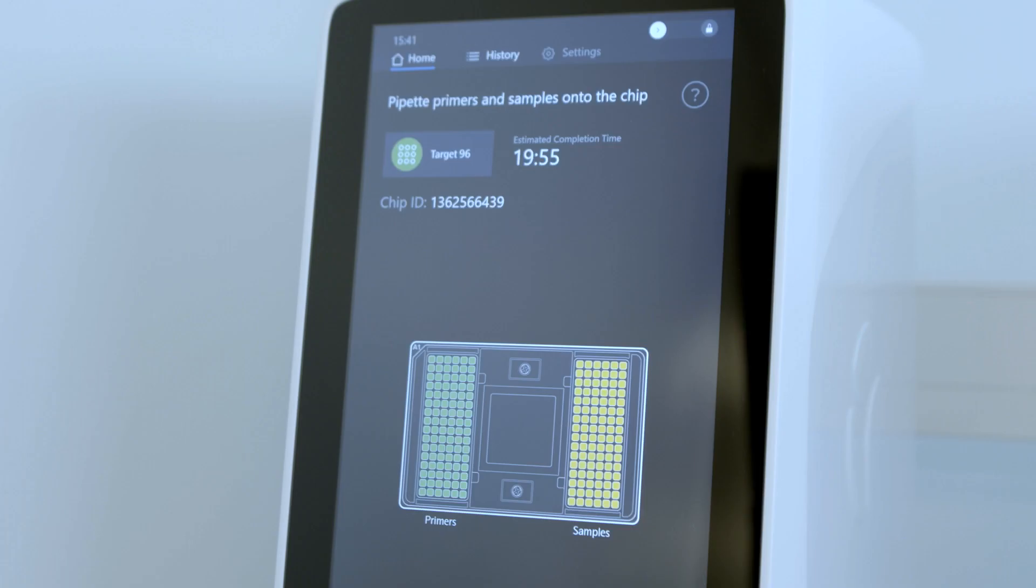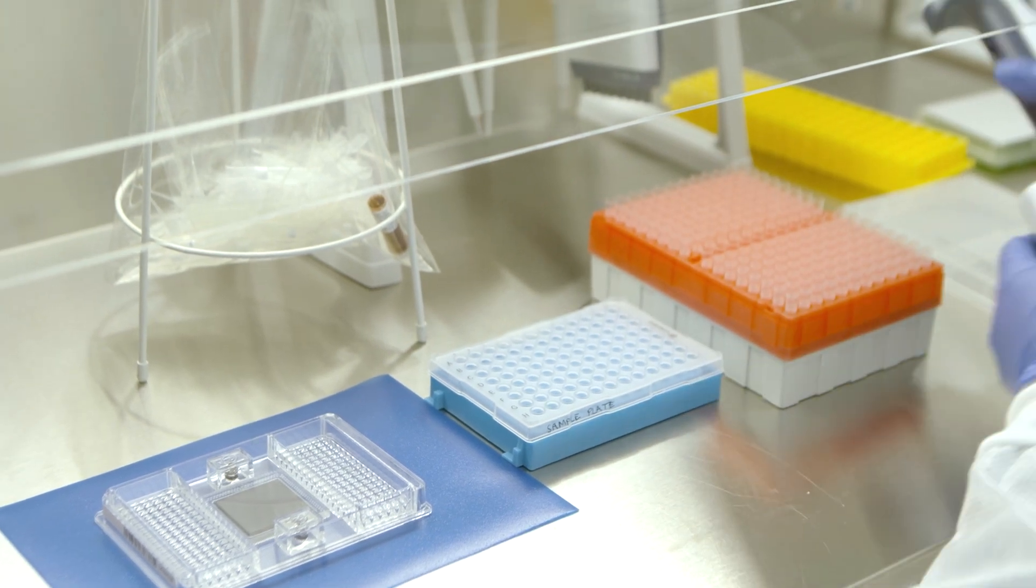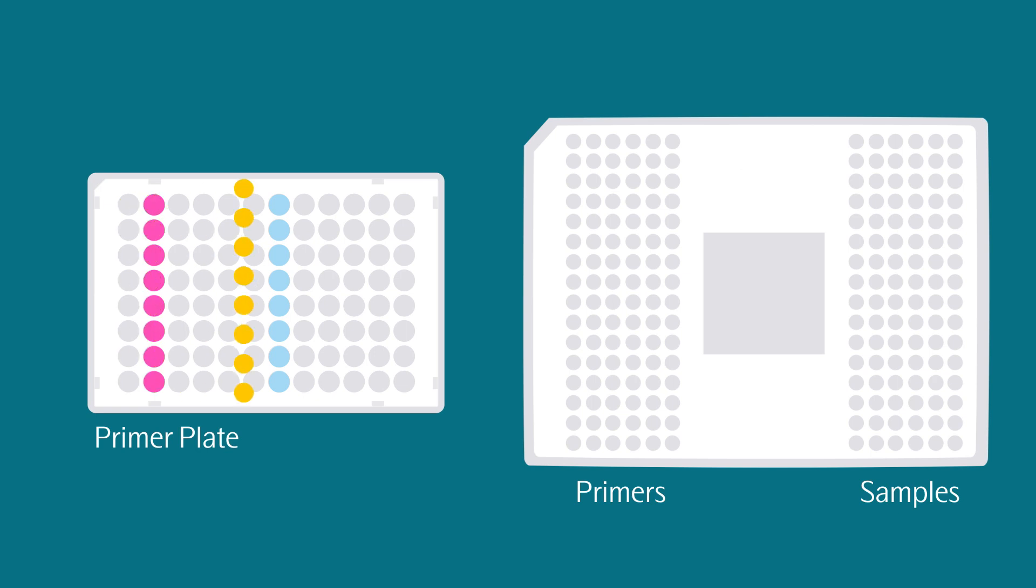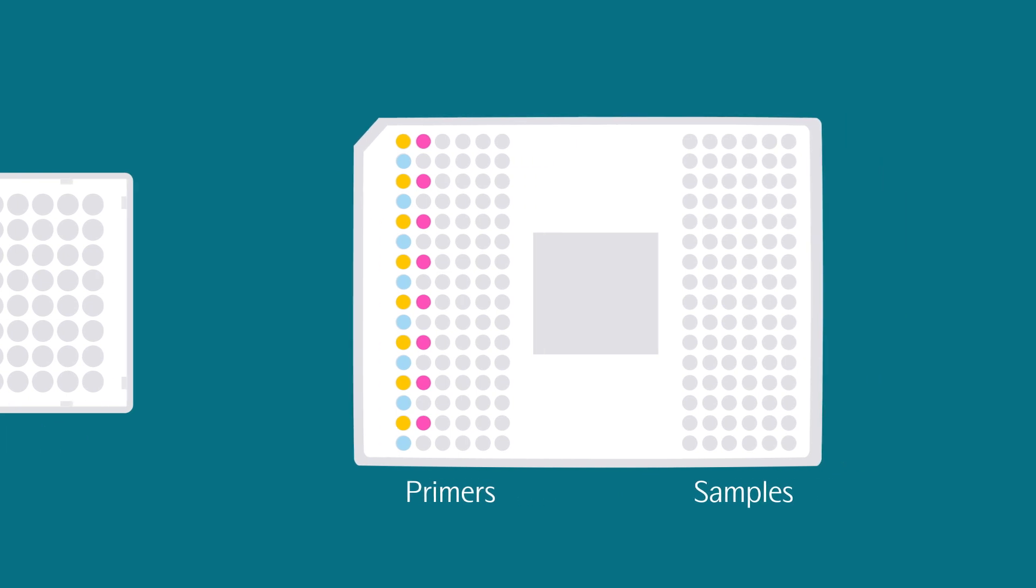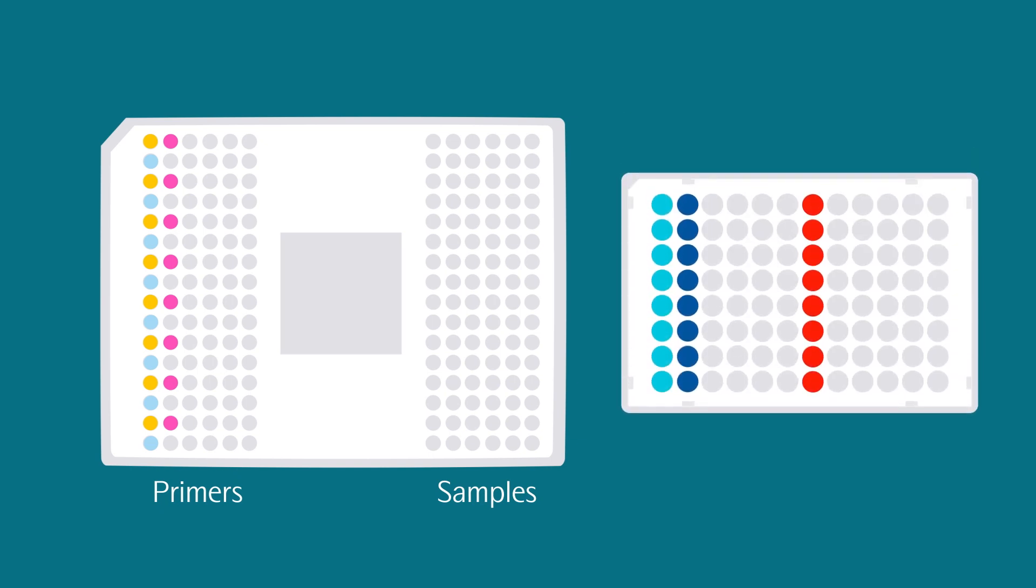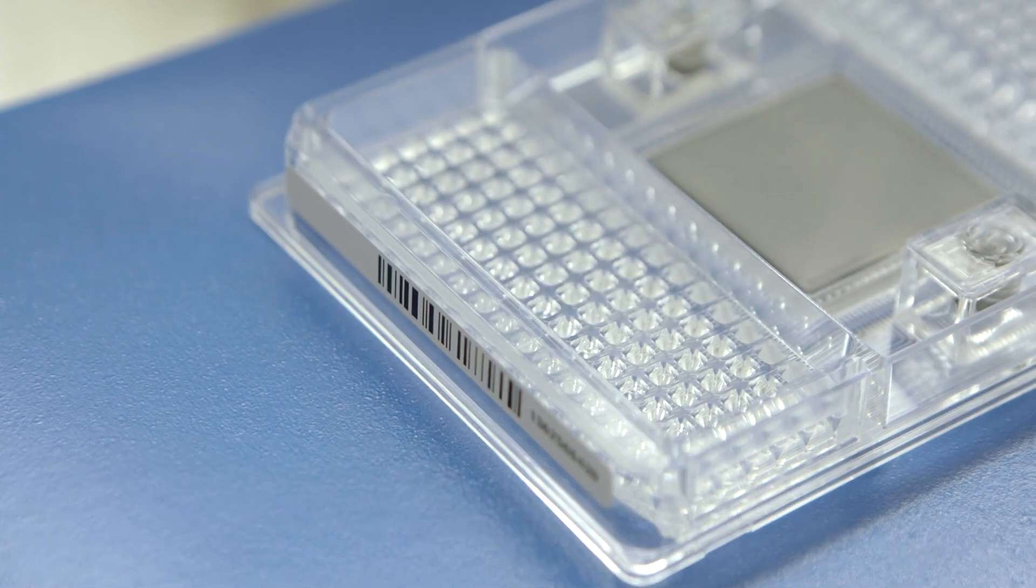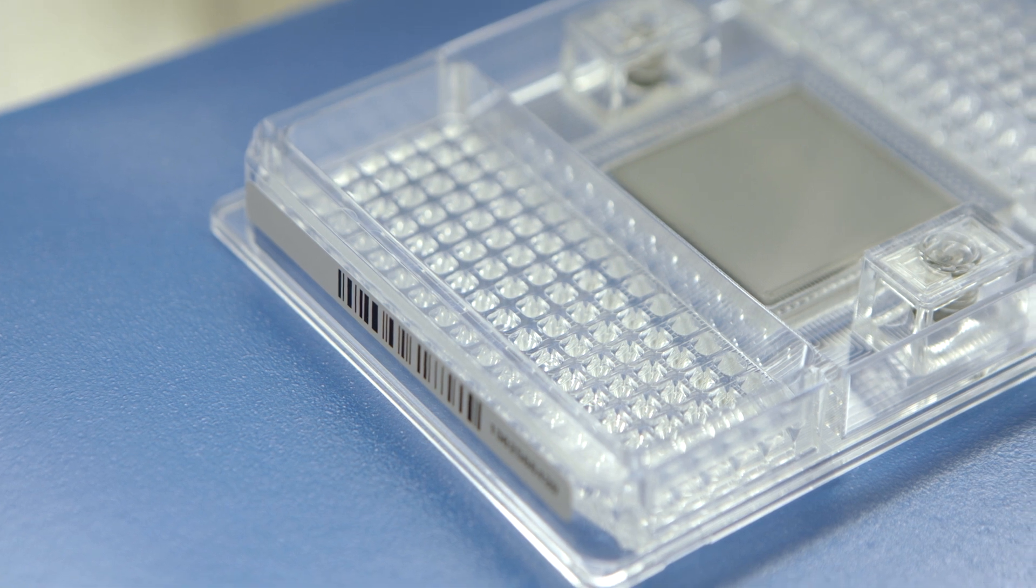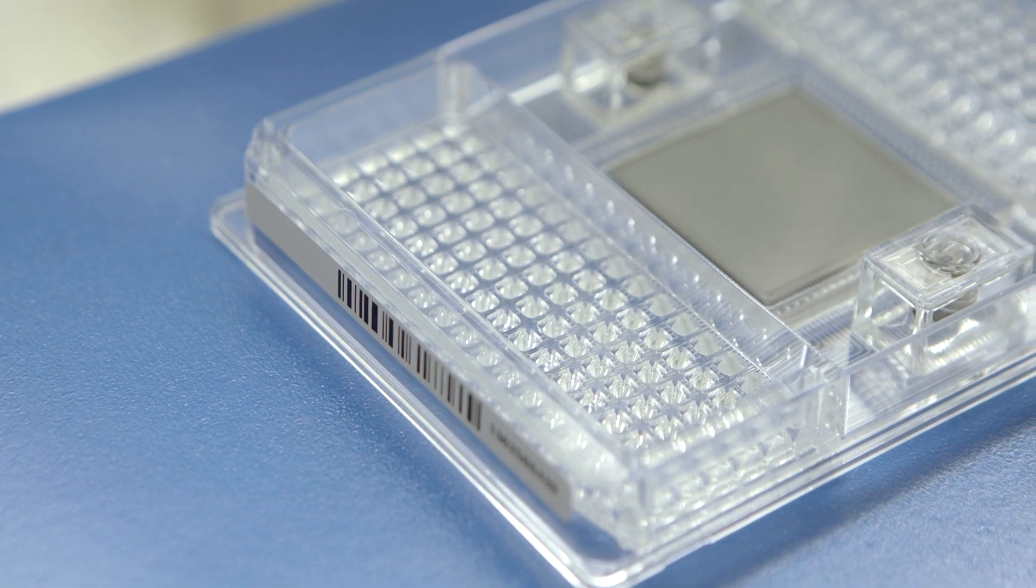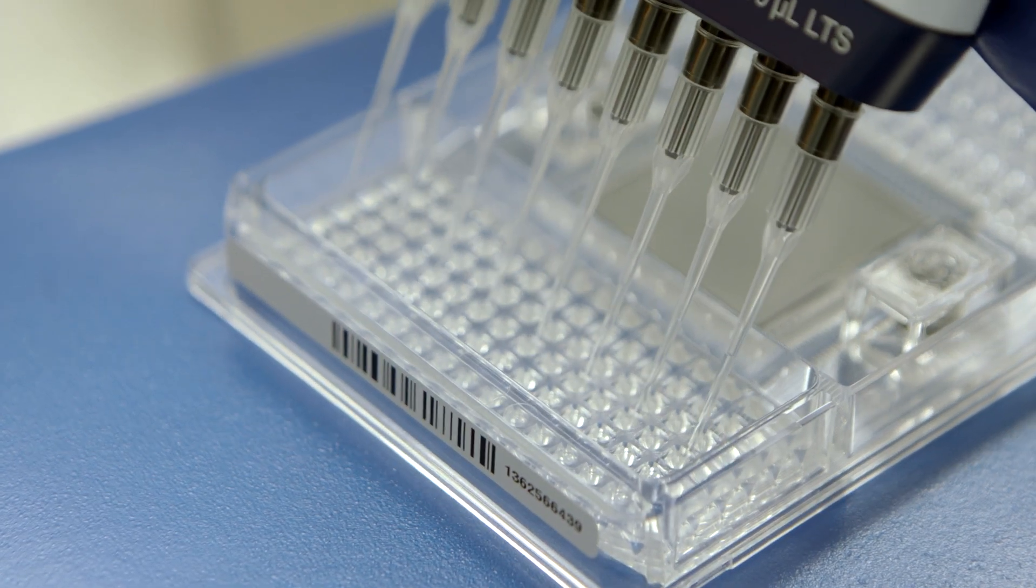The next step involves loading the primers and samples onto the Target 96 IFC. Using reverse pipetting, pipet 5 microliters of each primer into the respective primer inlets on the IFC on the left-hand side. Using reverse pipetting, pipet 5 microliters of each sample into the respective sample inlets on the IFC on the right-hand side. Carefully check for bubbles in both the wells for primers and samples before proceeding. If any bubbles are found, they should be removed using a syringe needle. Change needle between wells to avoid contamination.